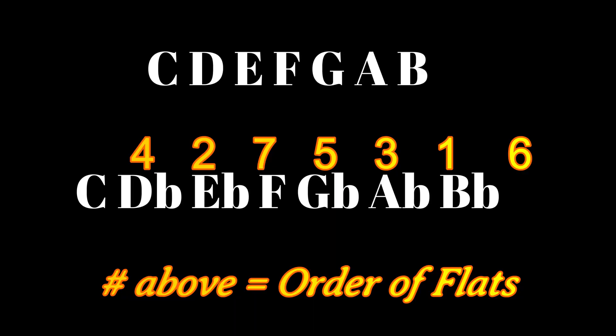Starting with C major Ionian mode — no sharps and no flats — the first flat we add is B-flat, giving us Mixolydian. Going up a perfect fourth from B-flat and adding an E-flat gives us Dorian mode. Up a perfect fourth again: Aeolian, Phrygian, Locrian. We've run through the cycle of flats all the way to G-flat, which gives us Locrian mode. Going up another fourth from G-flat should give us C-flat — but that's a key change.